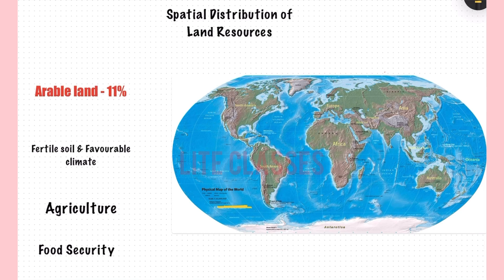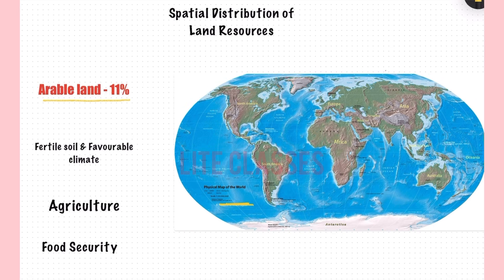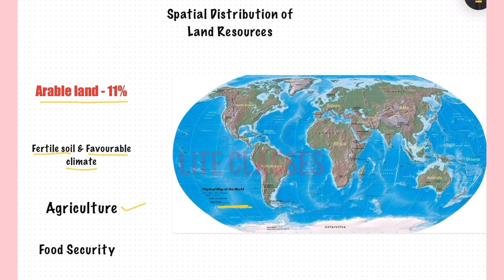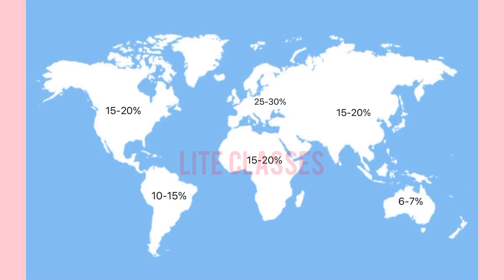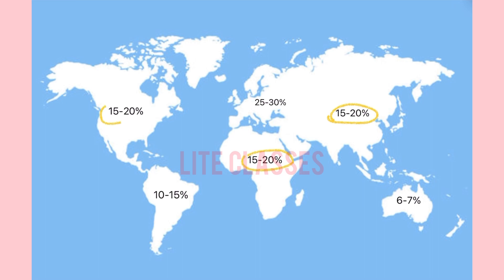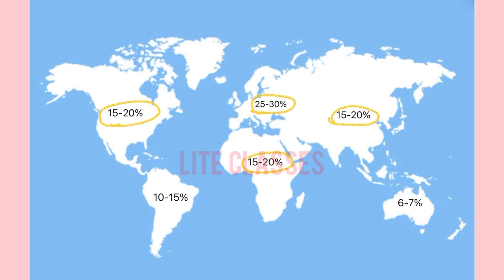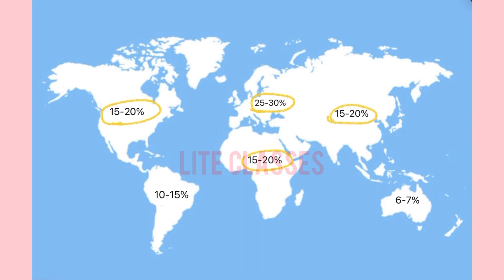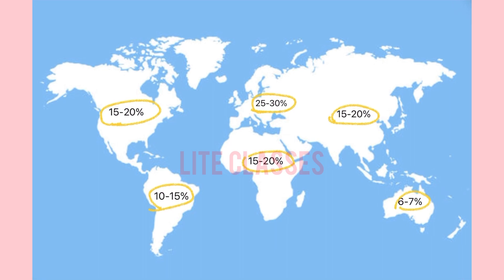Approximately 10 to 11% of the world's total land area is considered arable — referring specifically to land that can be used for growing crops, characterized by fertile soil and favorable climate. Understanding arable land distribution is crucial for food security, environmental conservation, and sustainable development. Asia, Africa, and North America have 15 to 20% of their land dedicated to agriculture. Europe has the largest percentage at 25 to 30%, South America has 10 to 15%, and Australia has the lowest at 6 to 7%.